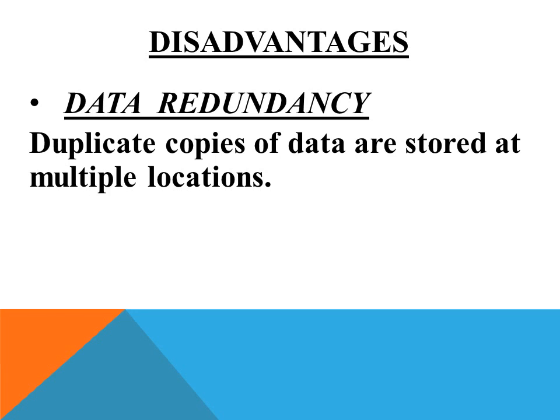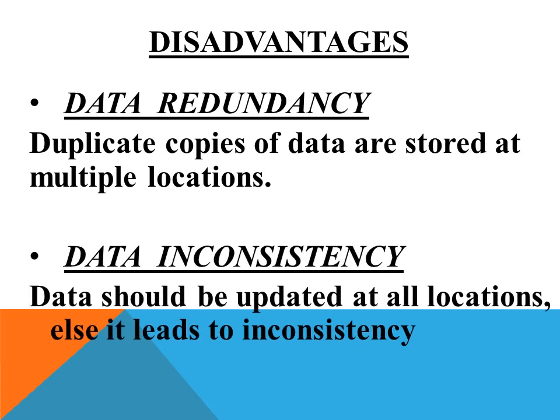Hope that data redundancy is clear to you. The next disadvantage is data inconsistency. Data inconsistency is somewhat related to data redundancy. That is, the data should be updated at all locations — wherever the data is stored, it should be updated in all those locations. In case of the traditional file system, as we have to create duplicate copies at two different locations, if at any particular location we are changing the data, that change should be reflected in all the other locations. That is one of the major disadvantages of using this traditional file system.